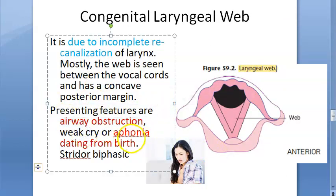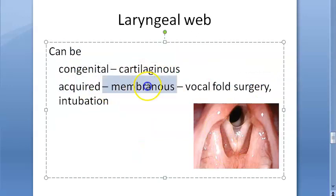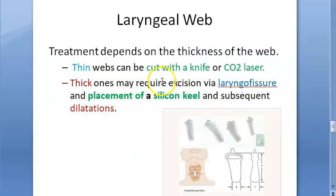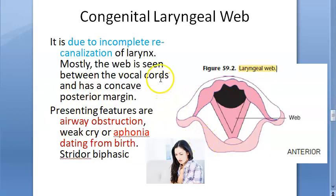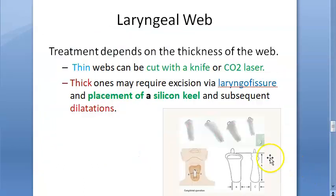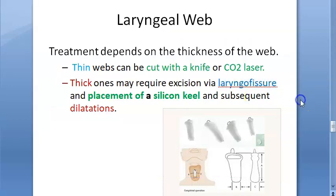To summarize: laryngeal web can be congenital or acquired. The presenting features are airway obstruction, aphonia, and biphasic stridor. The cause is incomplete recanalization of the larynx, with a concave posterior margin. Treatment: if thin, cut with a knife or carbon dioxide laser; if thick, perform laryngofissure, place a silicone keel, and do subsequent dilations so it does not reform.